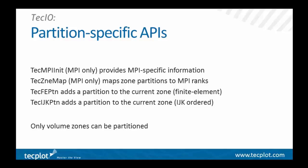For MPI only, we have TechMPI_Init, which you pass a couple of MPI-specific pieces of information. For partitioned zones, TechZNEMap tells the library which MPI rank owns which partition number for a particular zone. The other two APIs — TechFE_Partition and TechIJK_Partition (dropping the version number suffix) — are also in the serial library. This lets you develop your partitioned output on your desktop machine, which may not have MPI installed, and test it using the non-MPI version of TechIO. If that works correctly, you should expect it to work fine on the parallel machine using the TechIO MPI library.